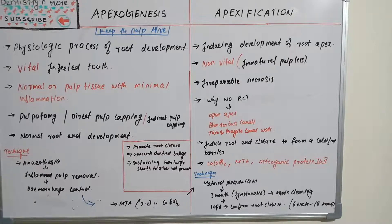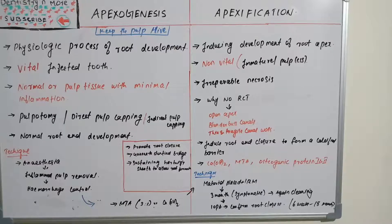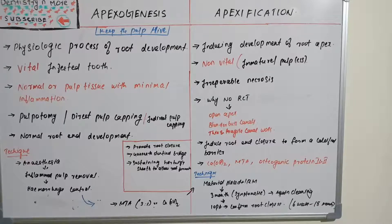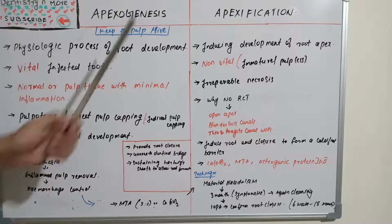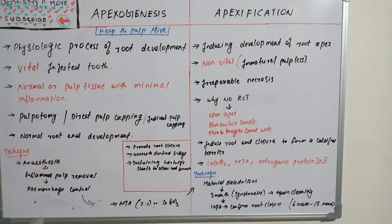The basic technique involves giving anesthesia, removing the inflamed pulp, controlling hemorrhage, and following standard protocol. MTA is placed in a ratio of 3:1, or calcium hydroxide can be used, but MTA is mostly preferred because it has greater regenerating potential. That is the apexogenesis process.